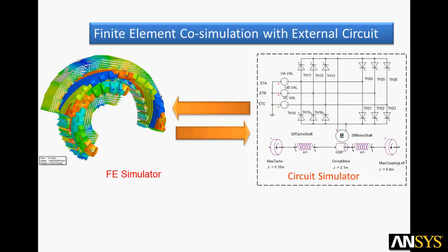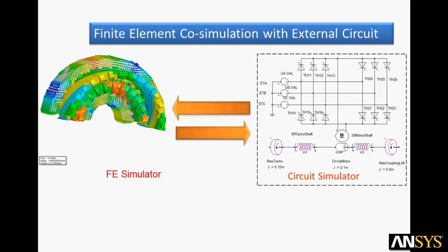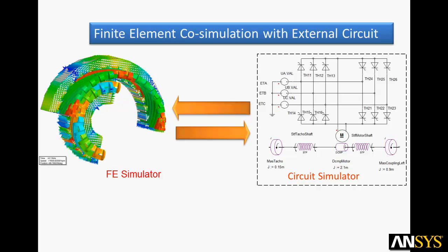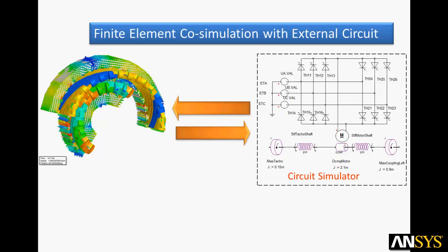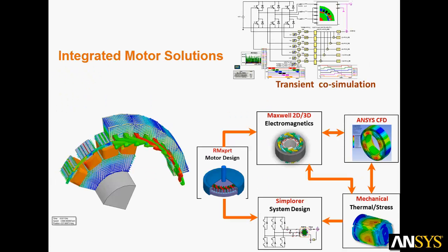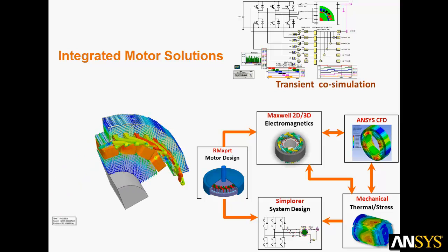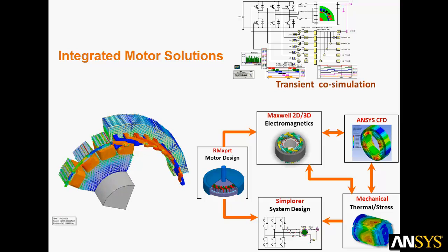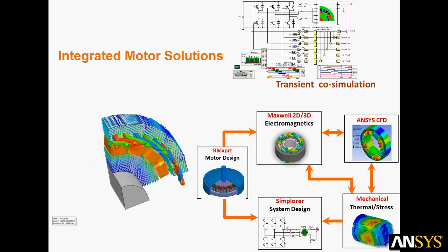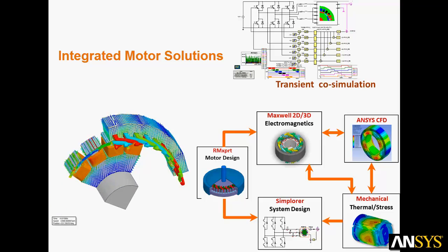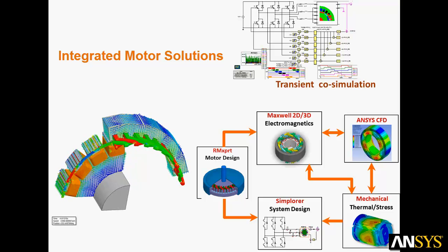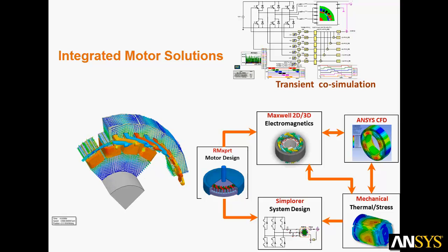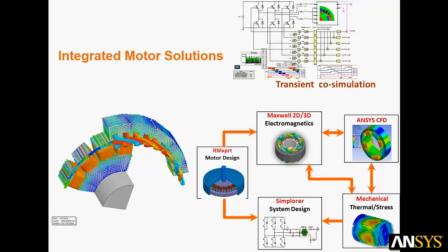Electric machines require appropriate electric drive circuits. Maxwell finite element analysis co-simulates with the Simplorer circuit simulator to evaluate how nonlinear behavior of the motor affects the drive circuit and vice versa. ANSYS tools allow you to simulate complete integrated motor behavior by linking physics and systems solutions. RMXpert provides the initial motor design in 2D and 3D models. Maxwell performs 2D and 3D electromagnetics analysis. ANSYS CFD and ANSYS Mechanical are used for thermal and mechanical stress. Simplorer ties all the physics together in a top-level system for drive circuits and other behavioral components.